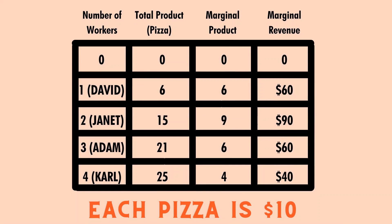So how many workers should Keynes be hiring? The answer lies in how much he's willing to pay each worker — represented by the marginal cost. Looking at the marginal revenue column: if the marginal cost per worker is thirty dollars, Keynes should hire all four workers, since all their marginal revenues exceed thirty dollars. However, if the marginal cost is fifty dollars, he should only hire David, Janet, and Adam, whose marginal revenues are greater than fifty dollars. Carl's marginal revenue of forty dollars is lower than fifty dollars, so Keynes should not hire Carl.